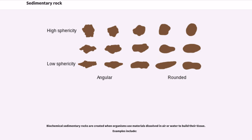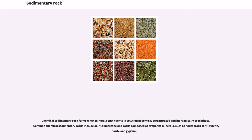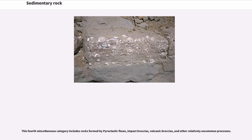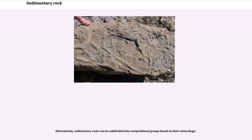Biochemical sedimentary rocks are created when organisms use materials dissolved in air or water to build their tissue. Chemical sedimentary rock forms when mineral constituents in solution become supersaturated and inorganically precipitate. Chemical sedimentary rocks include oolitic limestone and rocks composed of evaporite minerals such as halite, sylvite, barite and gypsum. A fourth miscellaneous category includes rocks formed by pyroclastic flows, impact breccias, volcanic breccias, and other relatively uncommon processes. Alternatively, sedimentary rocks can be subdivided into compositional groups based on their mineralogy.